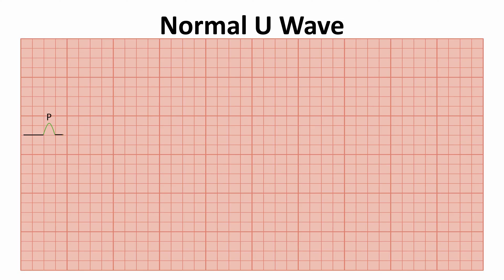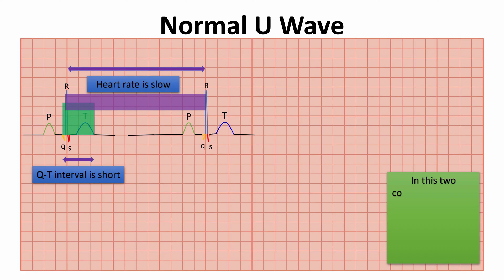The U wave is easier to recognize when the QT interval is short or the heart rate is slow, in which conditions it is clearly separated from the preceding T wave and the P wave of the following beat, respectively.